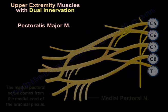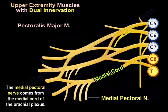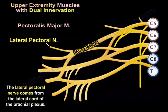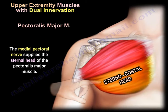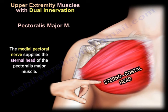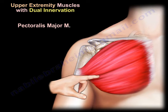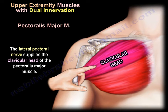The medial pectoral nerve comes from the medial cord of the brachial plexus, while the lateral pectoral nerve comes from the lateral cord of the brachial plexus. The medial pectoral nerve supplies the sternal head, and the lateral pectoral nerve supplies the clavicular head.